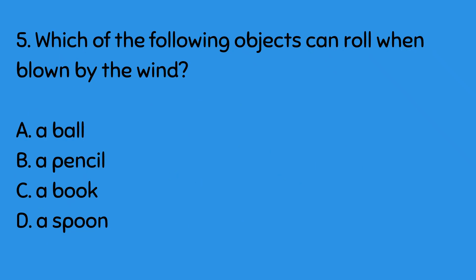Number 5: Which of the following objects can be moved by the wind? A. A ball, B. A pencil, C. A book, D. A spoon. What is your answer, kids? The answer is letter A, a ball.